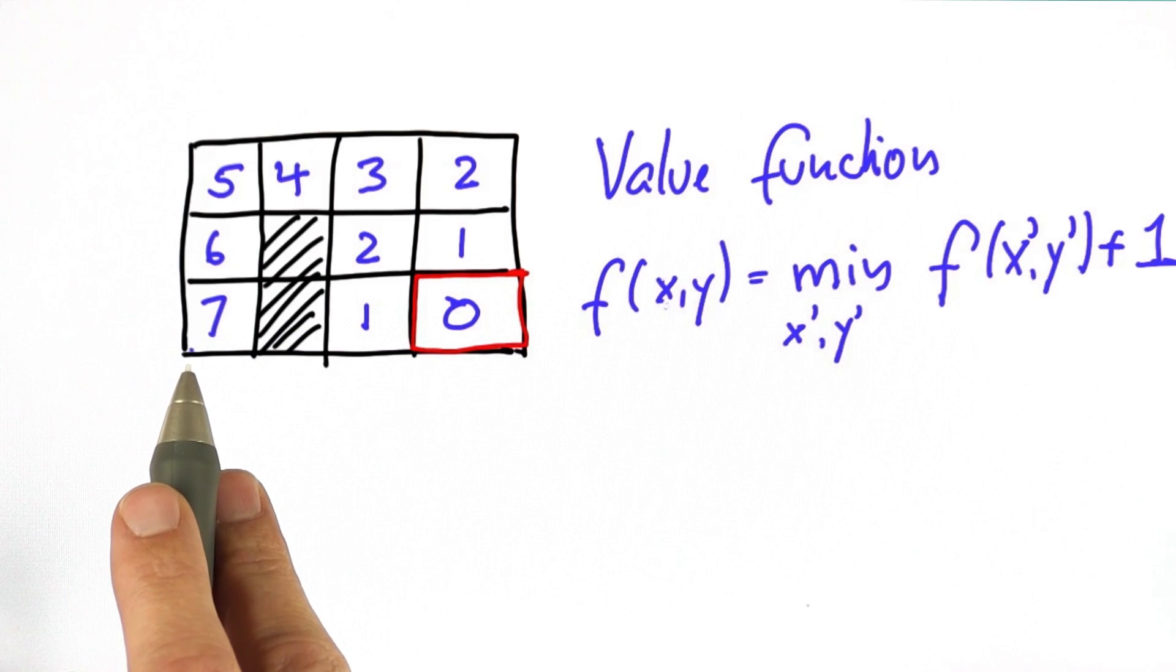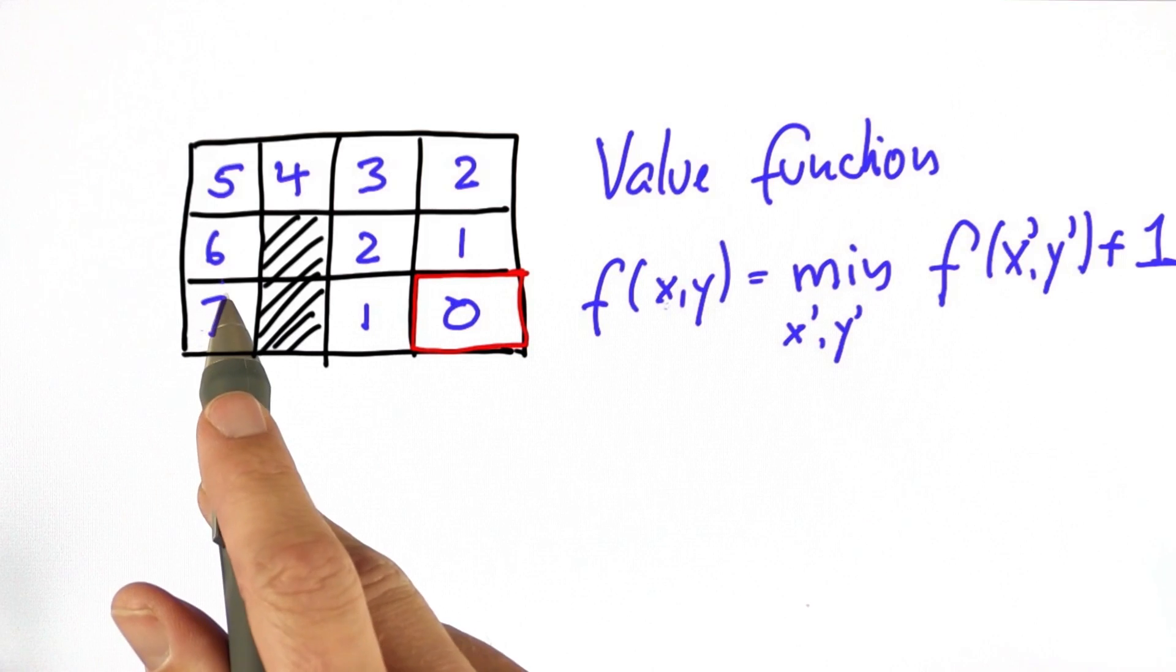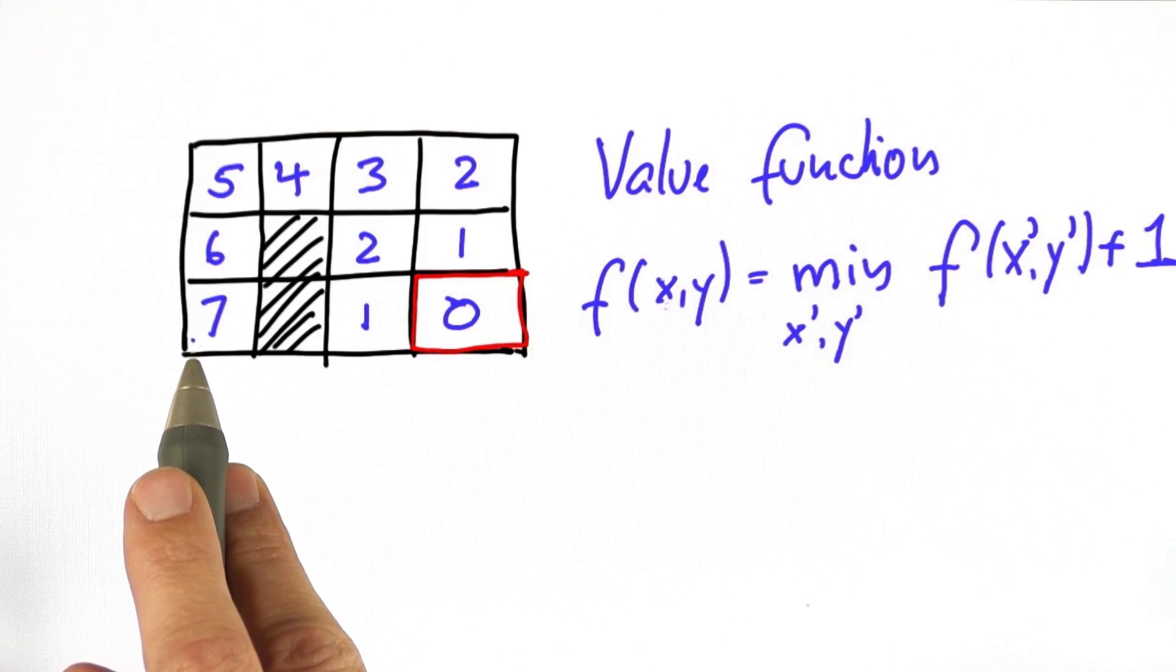And once we have this value function, we find that the optimal control action is obtained by minimizing the value, which is a hill-climbing type of action.